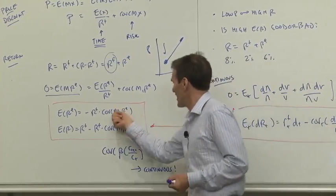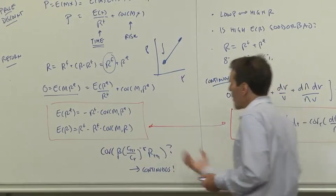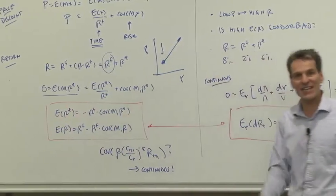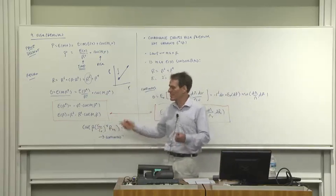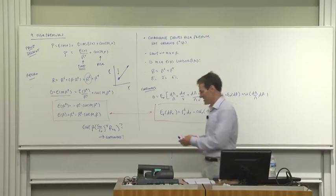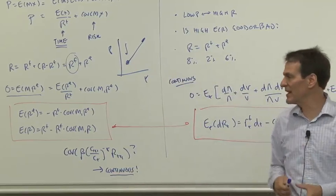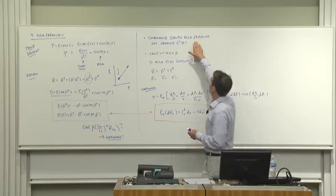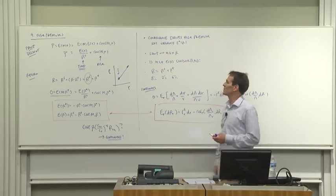We're almost ready to plug in M for consumption growth and start learning about the macroeconomic determinants of risk premiums — why do some securities pay higher average returns than others? But if we plug M in directly, we get a nonlinear function of consumption growth raised to some power. Going to continuous time, the continuous time limit will be linear and simple. We've learned that covariance drives the risk premium, not the variance of the return.